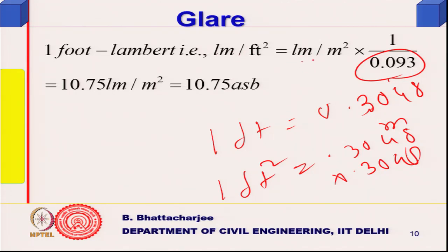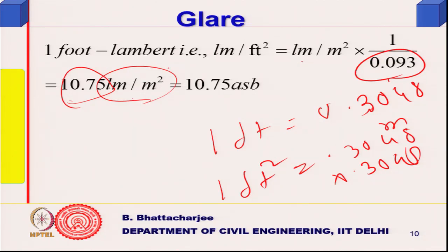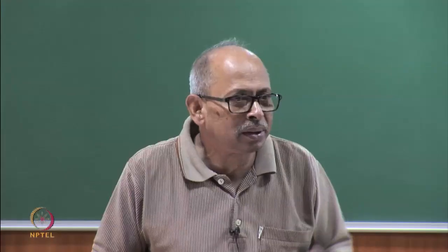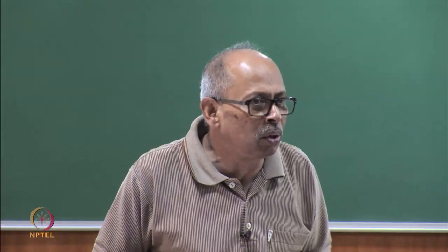Converting lumen to foot square: 10.75, and 1/π because 0.93 gives 10.75 lumen per meter square. Lux level is lumen per meter square. Foot Lambert was lumen per feet square — Lambert being the name of the scientist because of Lambert's law.